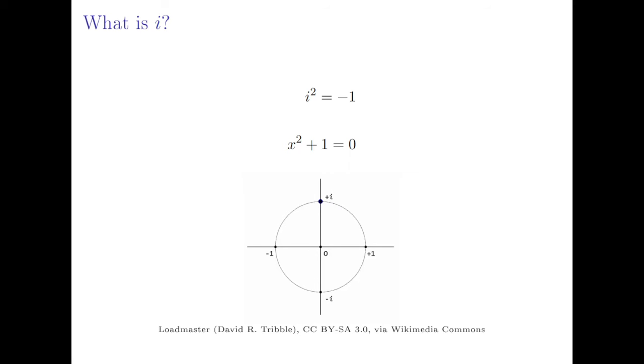Now of course on our traditional number line there aren't any numbers that square to be negative one, because positive numbers obviously square to positive numbers and negative numbers also square to positive numbers as the negatives cancel, and then zero squares to zero.